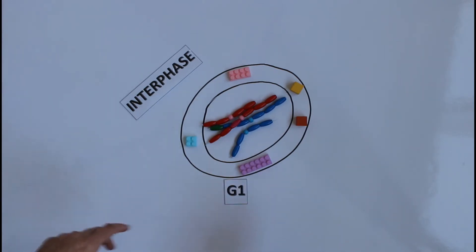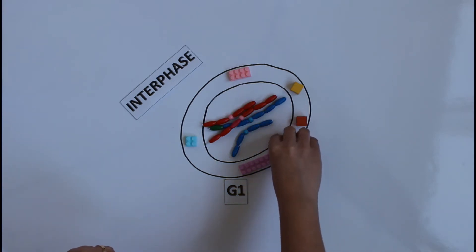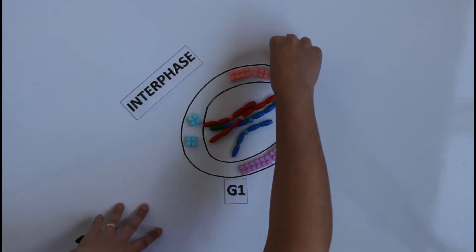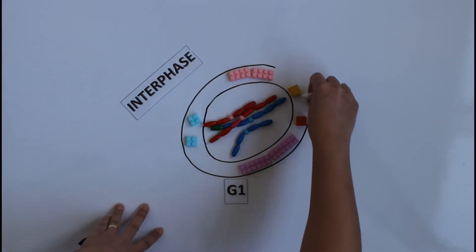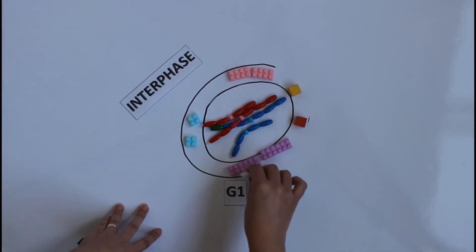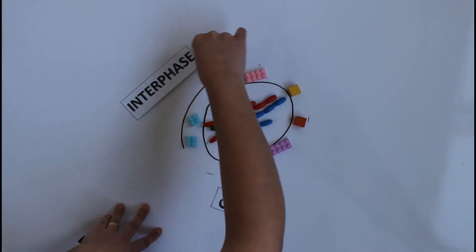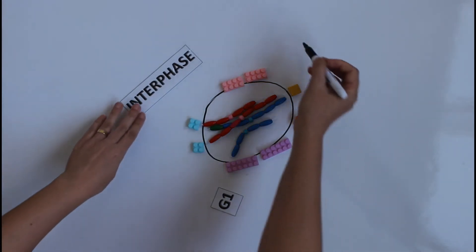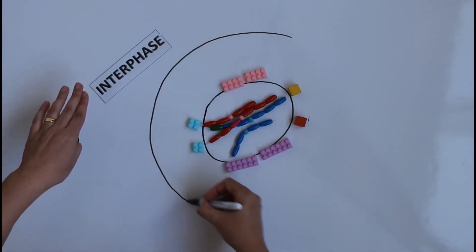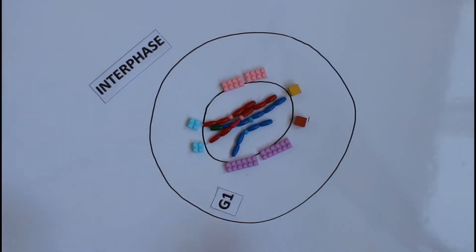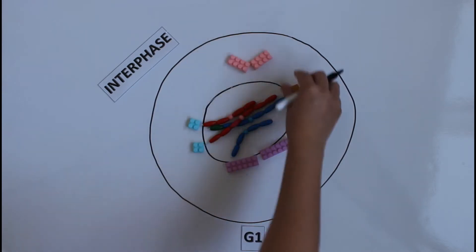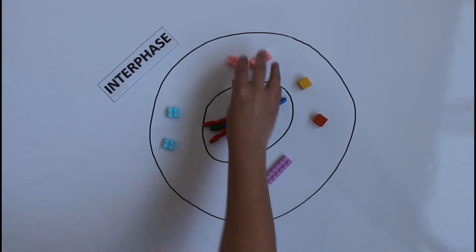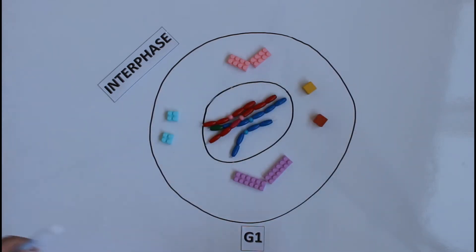In G1, what happens is the duplication of organelles — all organelles get multiplied, and also the cytosol. The cell membrane doesn't disappear; I'm just erasing to draw it bigger because in G1 the cell becomes bigger as all the cell's components duplicate. So the cell membrane becomes bigger and I multiply all the organelles and all the cubes — my cell is now bigger.